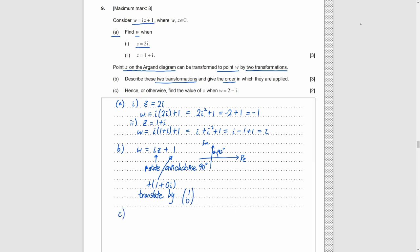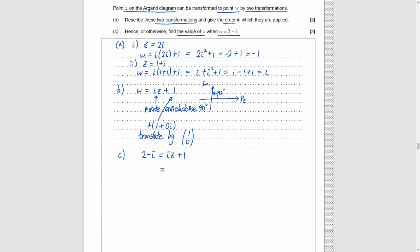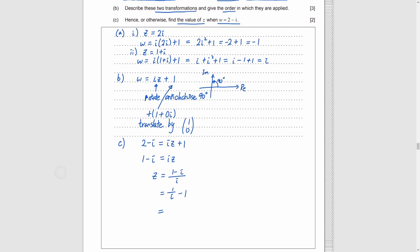Part C. Now we have W and we need to find Z. So we just need to substitute 2 minus i for W and solve the equation. We make Z to be the subject and get 1 minus i over i. Then we separate and multiply the term by i over i. We get negative i minus 1.